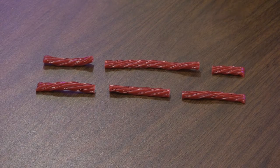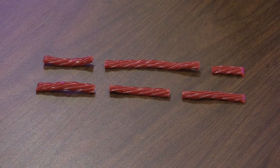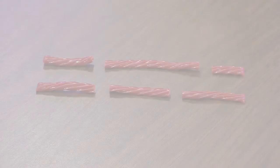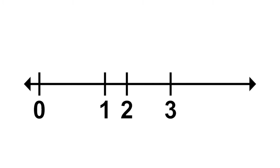When we partition a number line, we do so in a similar fashion. We want all partitions to be equal. If I had a number line like this, it would be incorrect because we need all parts to be equal.